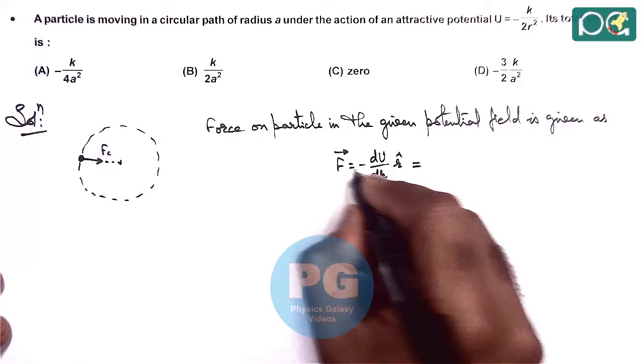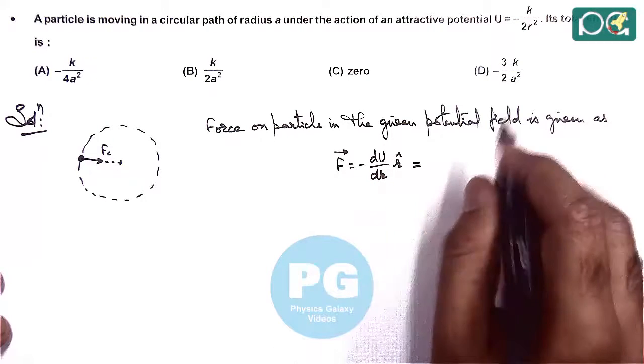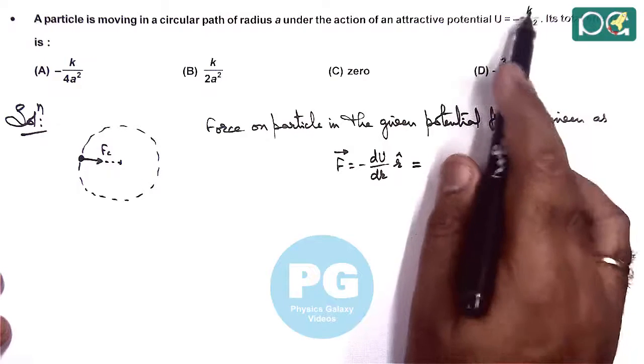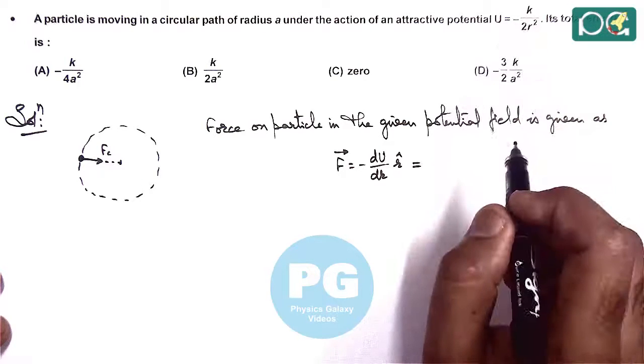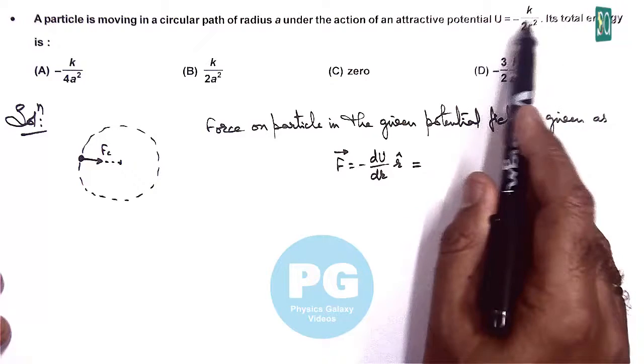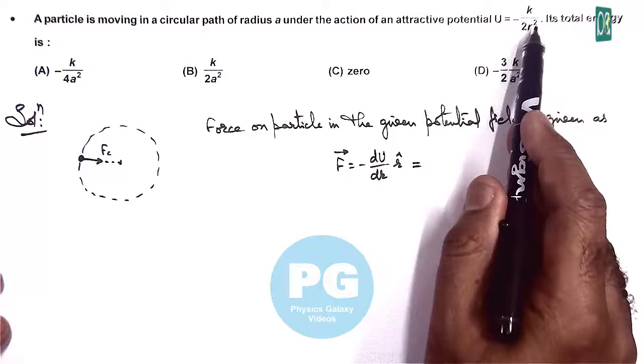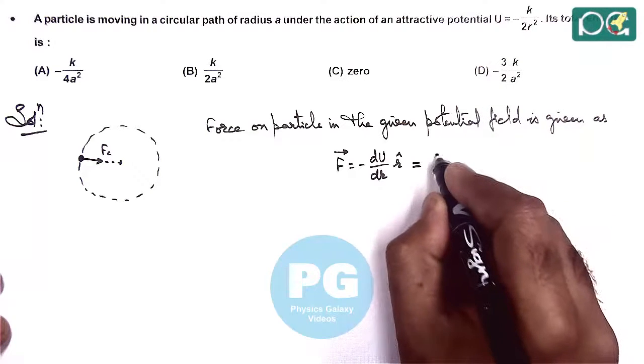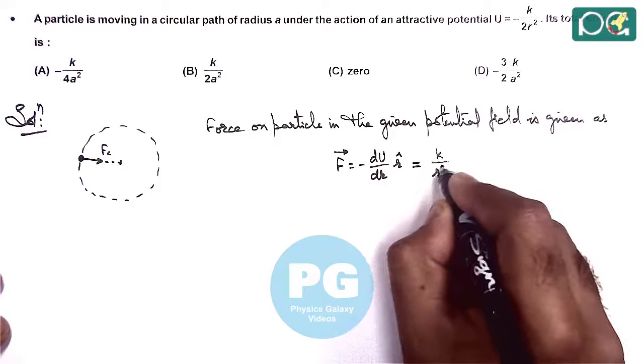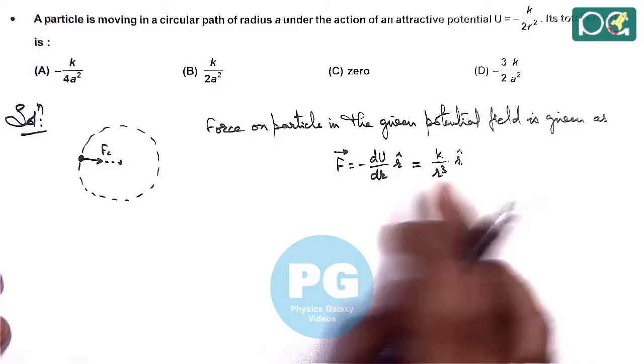The force magnitude is found by differentiating: d/dr(1/R²) = -2/R³, giving us F = (K/R³)R̂. This is the force acting.